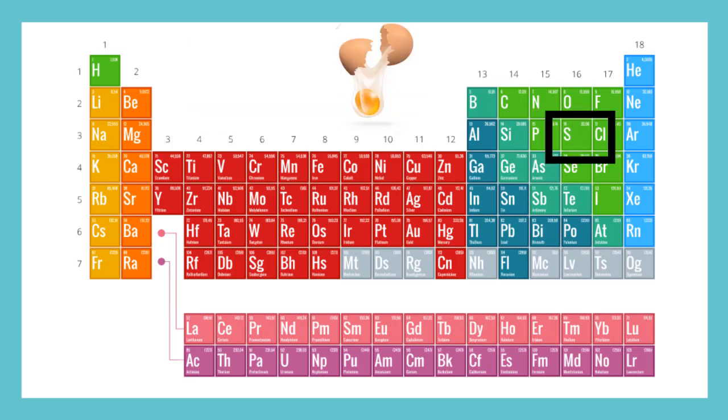Number sixteen is sulfur, which we write as S. Sulfur is found in egg yolks, and funny enough, it can smell like rotten eggs.